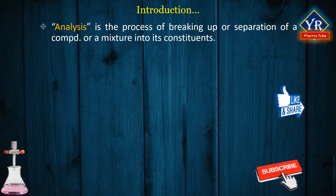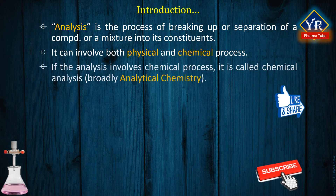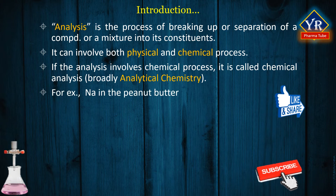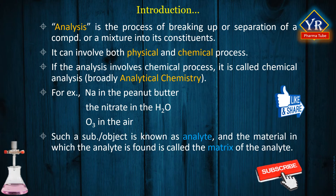The term analysis is commonly employed for the process of breaking up or separation of a compound or a mixture into its constituents. It can involve both physical and chemical processes. If the analysis involves chemical processes, it is called chemical analysis or more broadly analytical chemistry. The sodium in peanut butter, the nitrate in water, and the ozone in the air are substances that are objects of analysis. Such a substance or object is known as the analyte, and the material in which the analyte is found is called the matrix of the analyte.